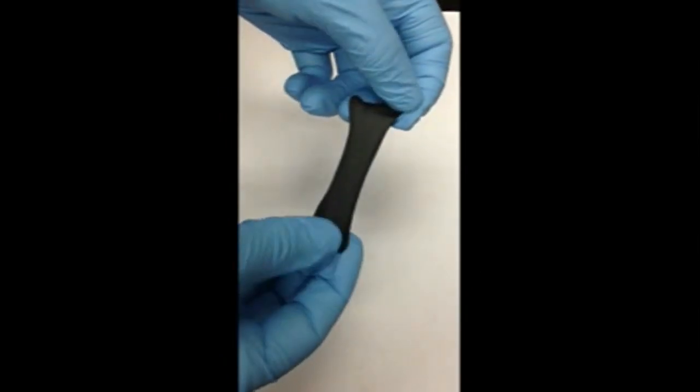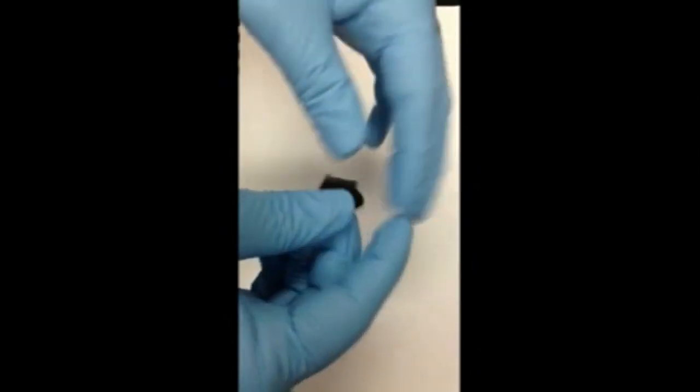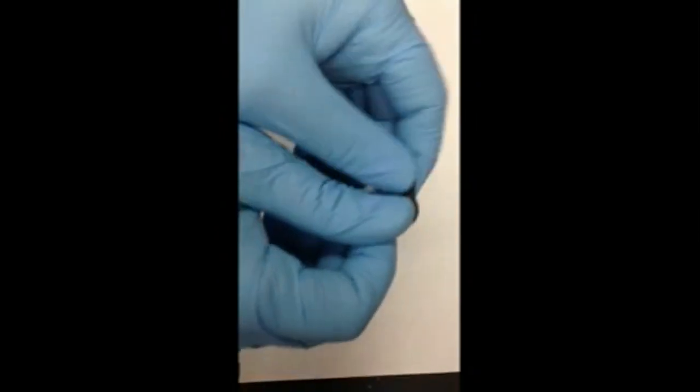A new super stretchy sensor is on its way thanks to an unexpected pairing of chewing gum and carbon nanotubes.